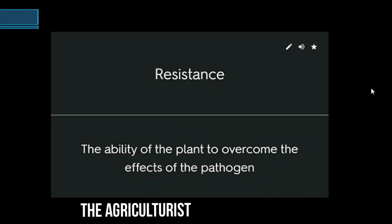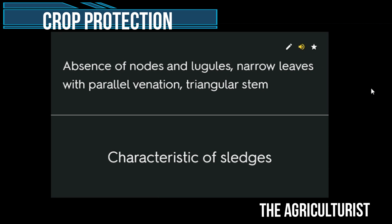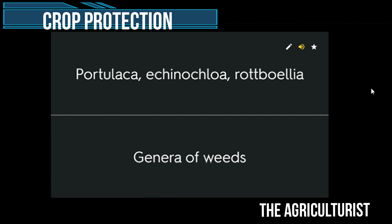Resistance — the ability of the plant to overcome the effects of the pathogen. Absence of nodes and ligules, narrow leaves with parallel venation, triangular stem — characteristics of sedges. Portulaca, Echinochloa, Rottboellia — genera of weeds.